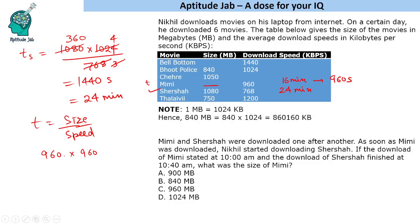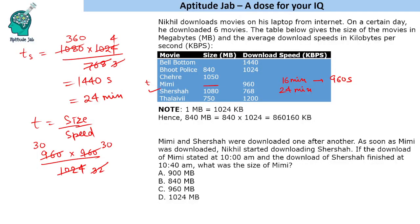Time is 960 seconds and speed is 960 KB/s. Multiplying gives the size in kilobytes. Dividing by 1024 — which is 32 squared — converts to megabytes. Simplifying 960 ÷ 32 = 30, and 30 × 30 = 900. So the size of movie Mimi is 900 MB.